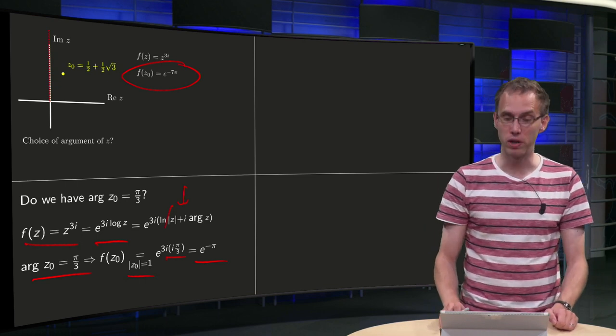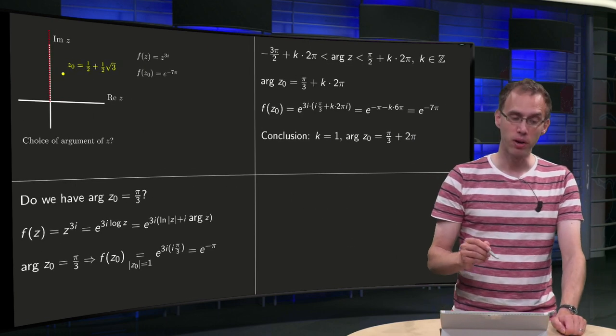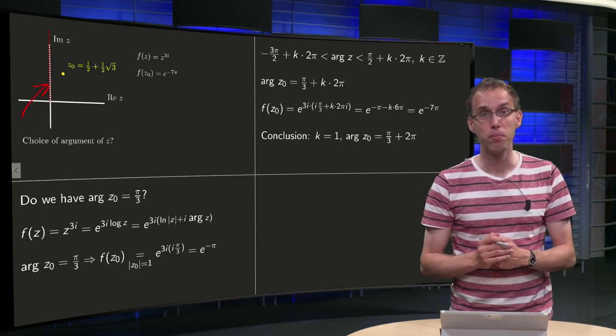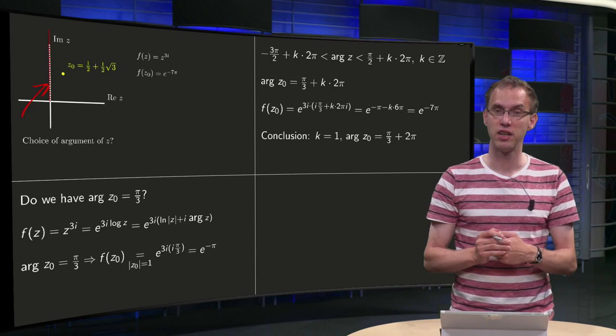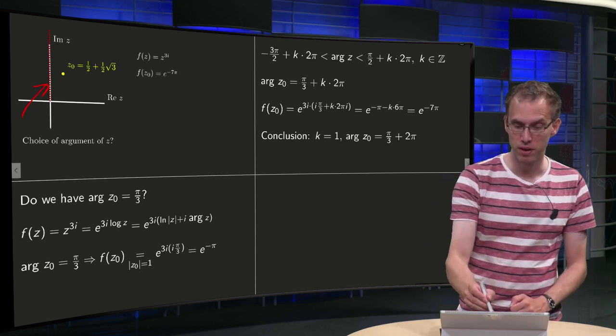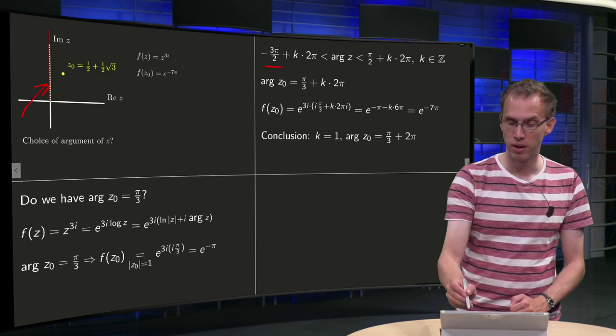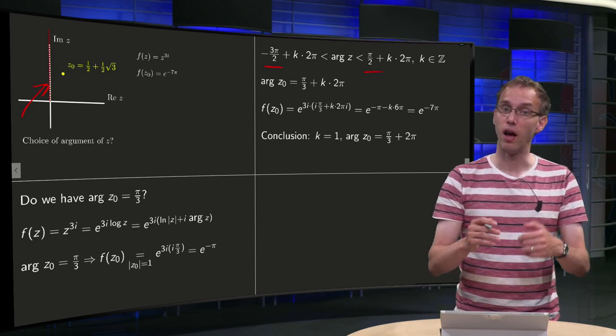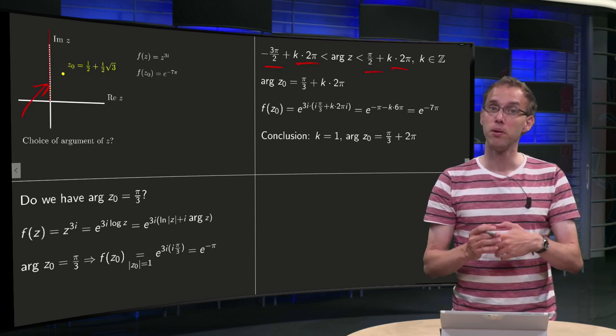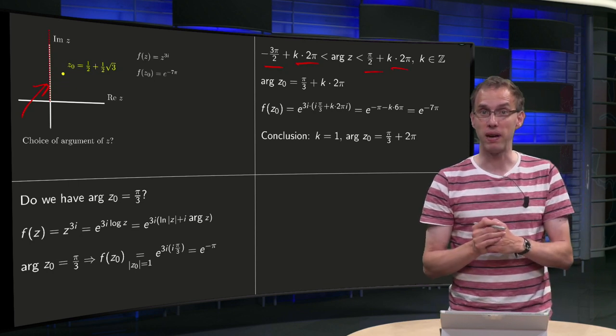But what did we do? You see, our branch cut is over here, along the positive imaginary axis. So that means that our arguments are between minus 3pi over 2 and pi over 2 plus a multiple of 2pi. But what k did we pick in this case?